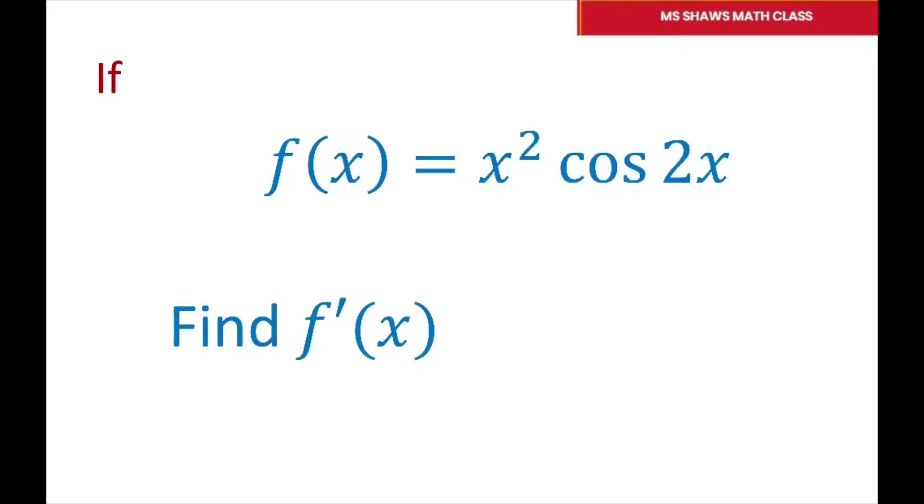Hi everyone! We're going to find the derivative of this function x squared times cosine of 2x. And basically we're going to use the product rule.